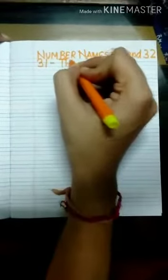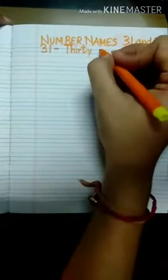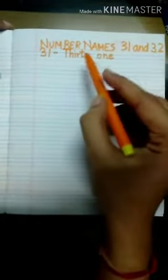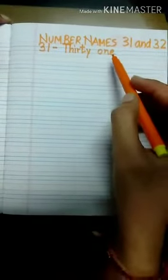3, 1 — a small dash — t, h, i, r, t, y, o, n, e: thirty-one, 31. To write 31, we will first write the spelling of 30 and then 1.